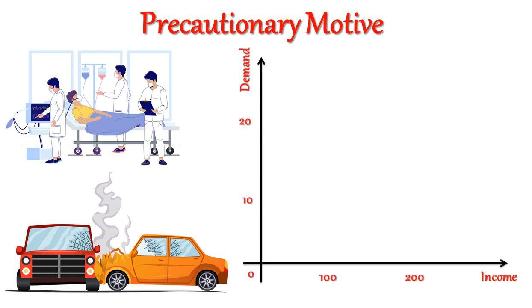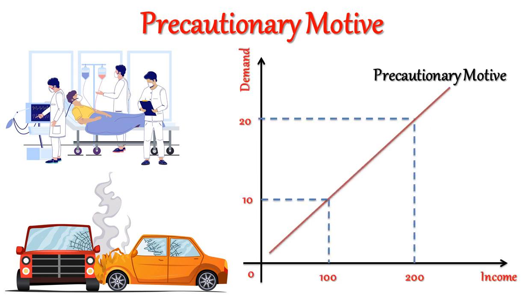The amount of money held under these two motives, M1, is a function of the level of income Y, and is expressed as: M1 = L1(Y).